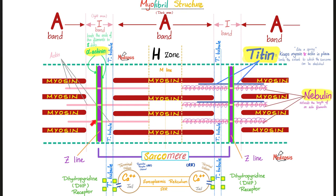Actin fibers are isotropic — that's why we call them the I-band. Myosin fibers are anisotropic — the A-band. Notice the A-band contains myosin and some actin. The H-zone contains only myosin. The M-line is in the midline.